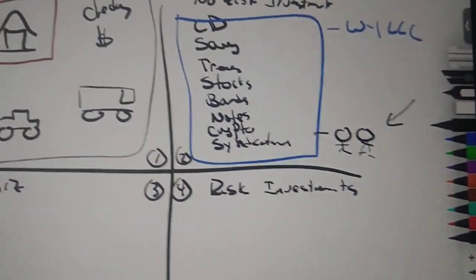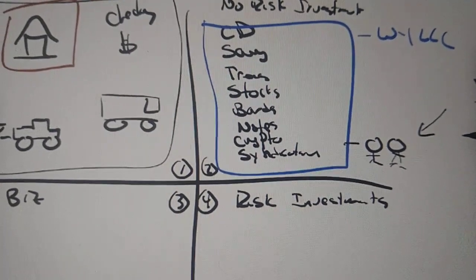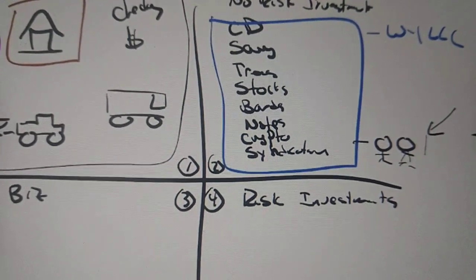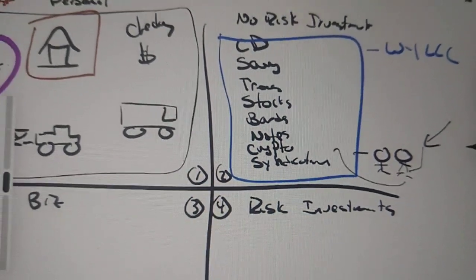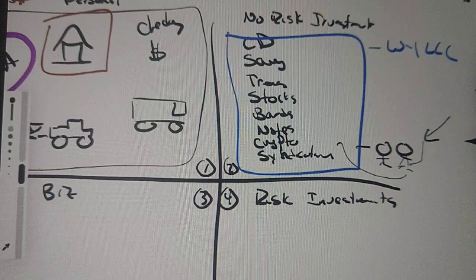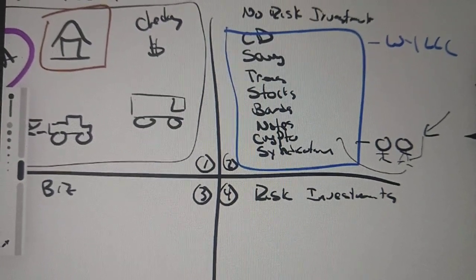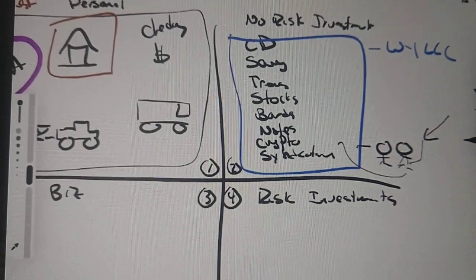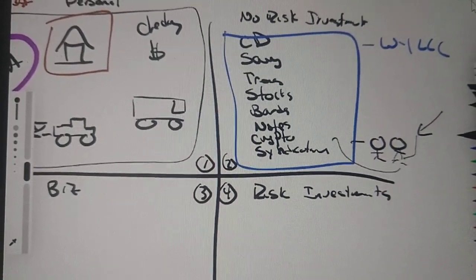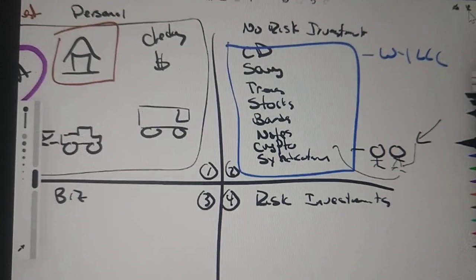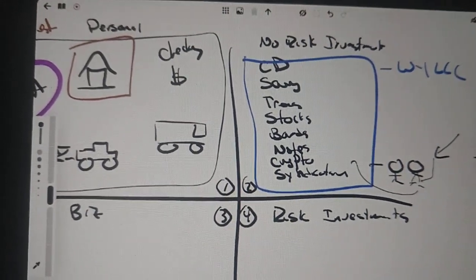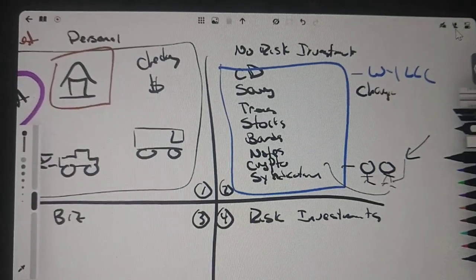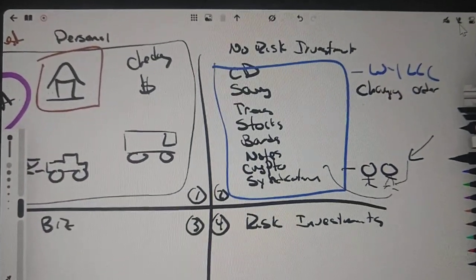...because if you get sued personally, I want to ensure that a creditor cannot get a judgment against you, get up here and get into these assets. Wyoming is one of just a handful of states that provide the ultimate protection by ensuring that if you get a judgment, somebody sues you, they're not able to get into your assets. What am I referring to here? It's what's called charging order protections.